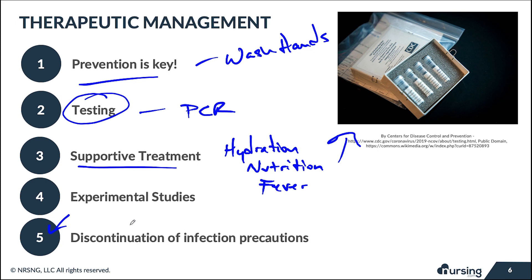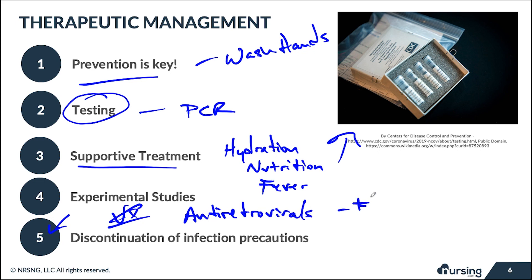Because there is currently no vaccine, experimental treatments are being explored. Antiretrovirals — medications used for conditions like the flu and HIV — are being trialed to reduce the prevalence of this illness. In some cases they are showing results, but this is highly experimental. Be aware that if a patient tests positive for coronavirus, antiretrovirals may be part of their treatment plan.